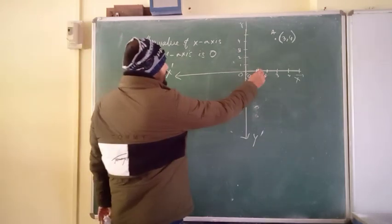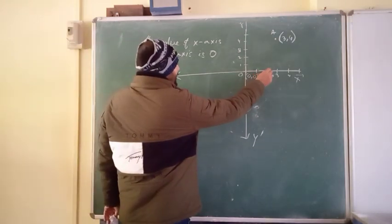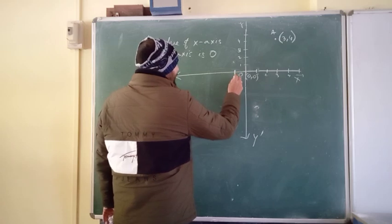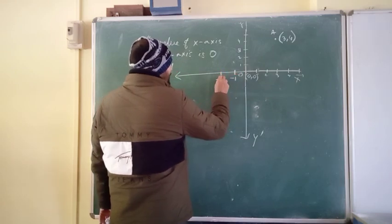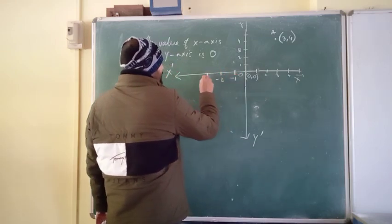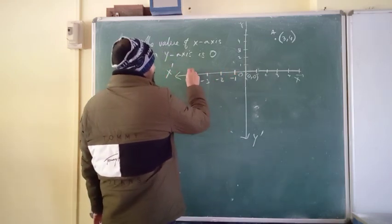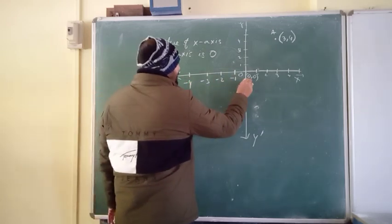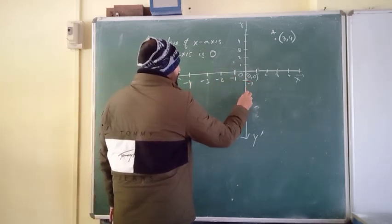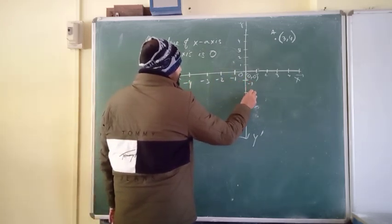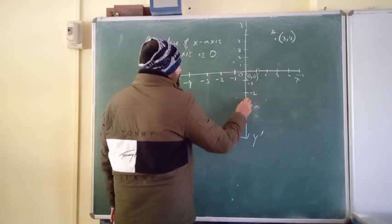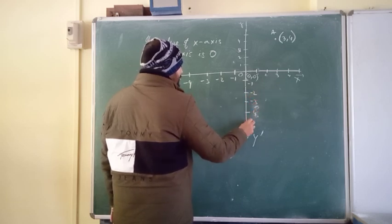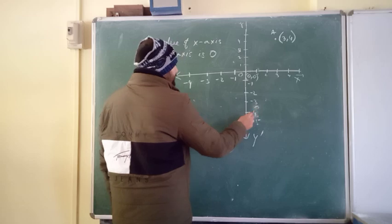On the y-axis, going upward gives positive values: 1, 2, 3, 4. Going downward gives negative values: minus 1, minus 2, minus 3, minus 4. Similarly, on the x-axis, going left gives negative values: minus 1, minus 2, minus 3, and going right gives positive values.